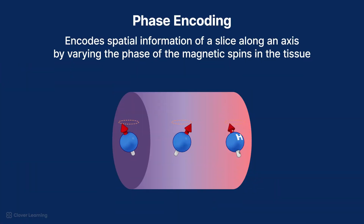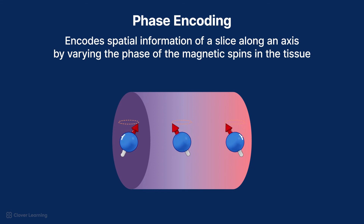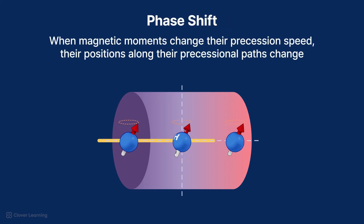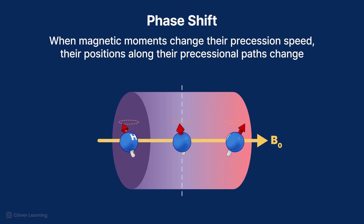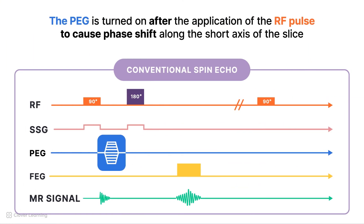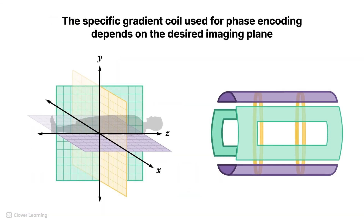In summary, phase encoding is a method used to encode spatial information of a slice along its short axis. It works by varying the phase of the magnetic spins in the tissue using a gradient magnetic field. When the phase encoding gradient is applied, it causes the spins of the magnetic moments in different locations along the gradient to precess at different rates, depending on their position along the gradient axis. As the magnetic moments change their precession speed, they experience phase shift. The PEG is turned on after the application of the RF excitation pulse in order to cause phase shift along the short axis of the slice. The specific gradient coil used for phase encoding depends on the desired imaging plane.